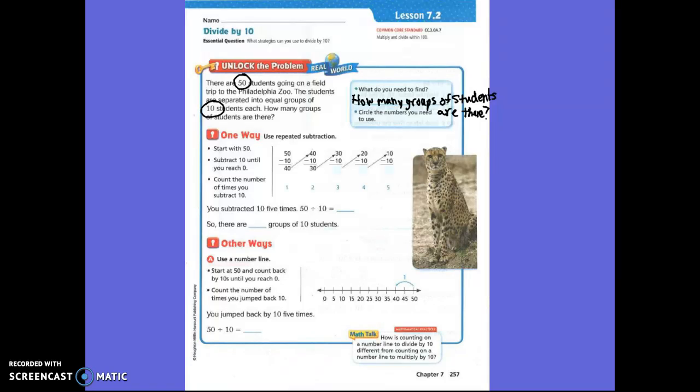Their first way to figure this out is by using repeated subtraction, where you start with fifty and you subtract ten until you get to zero. So they start out, fifty subtract ten equals forty, and then they put forty on top. Forty subtract ten equals thirty. Thirty subtract ten equals twenty. Twenty subtract ten equals ten, and ten subtract ten equals zero.